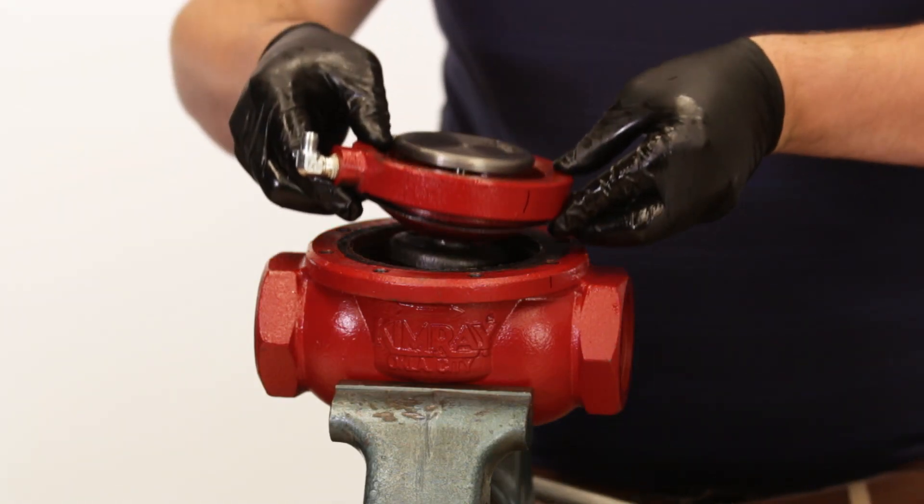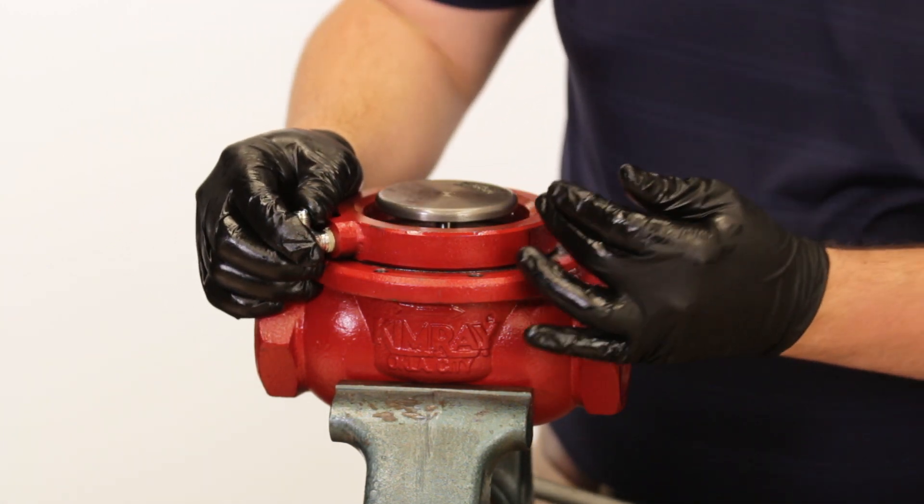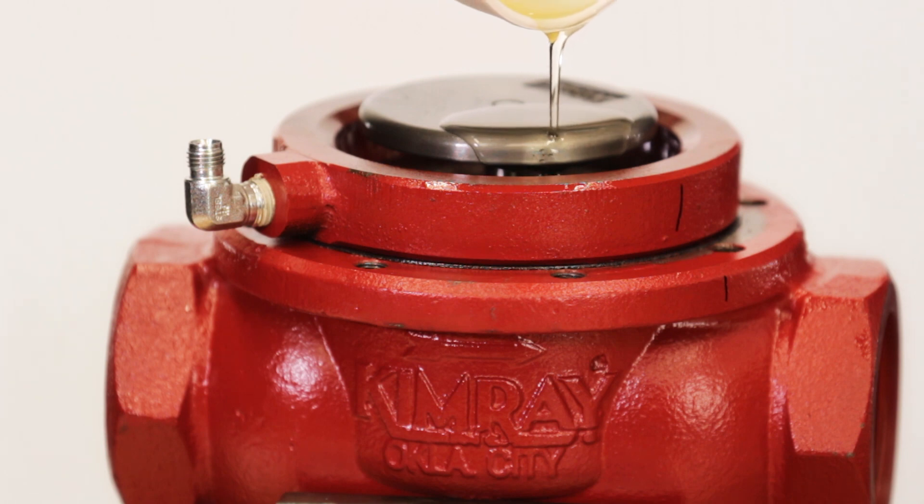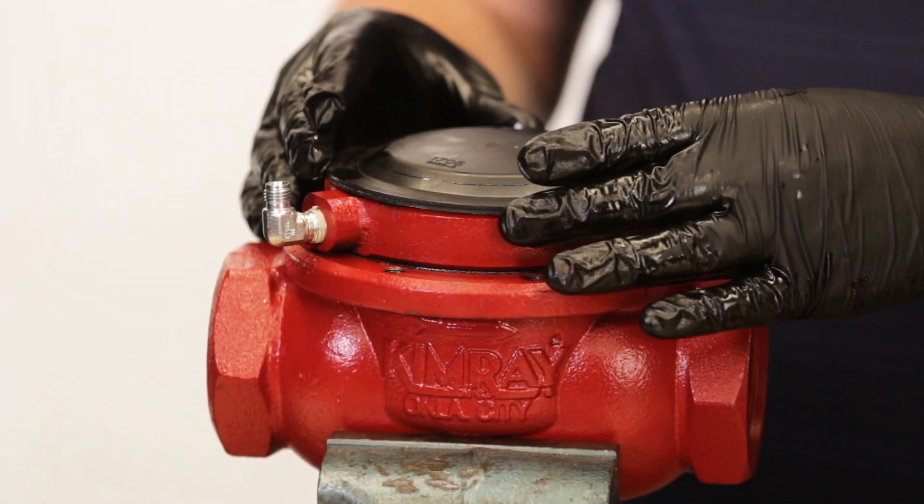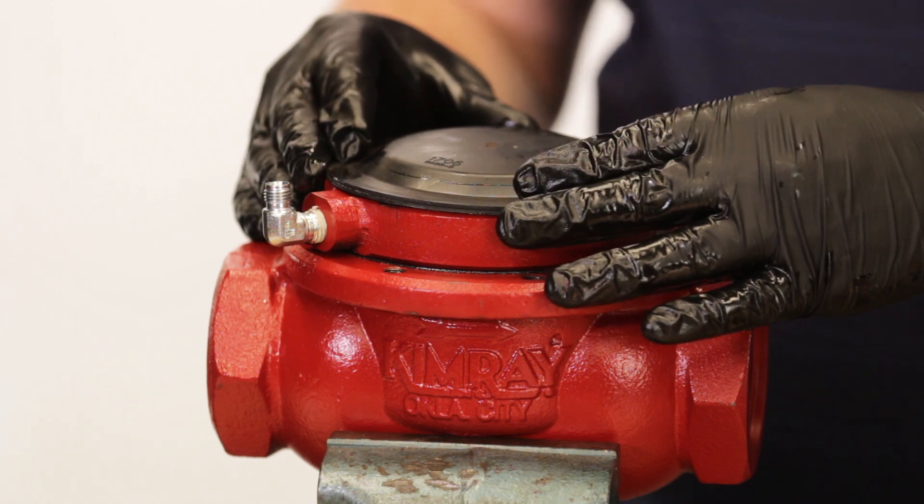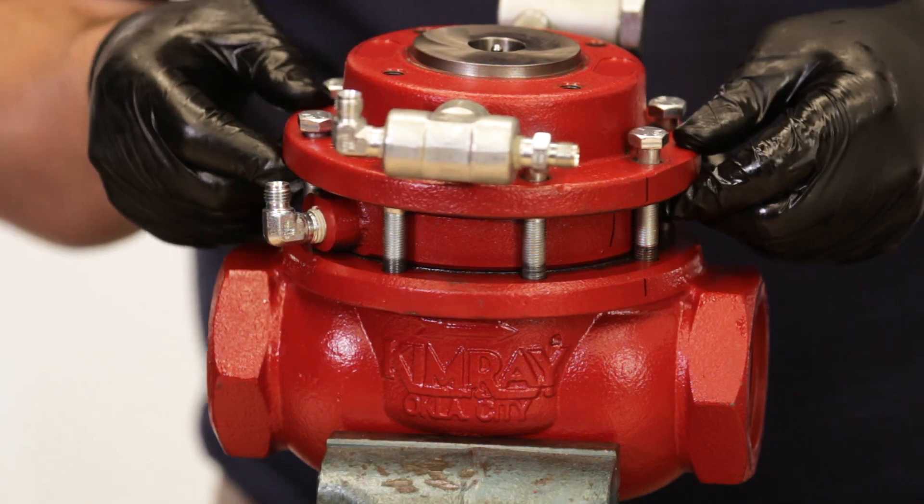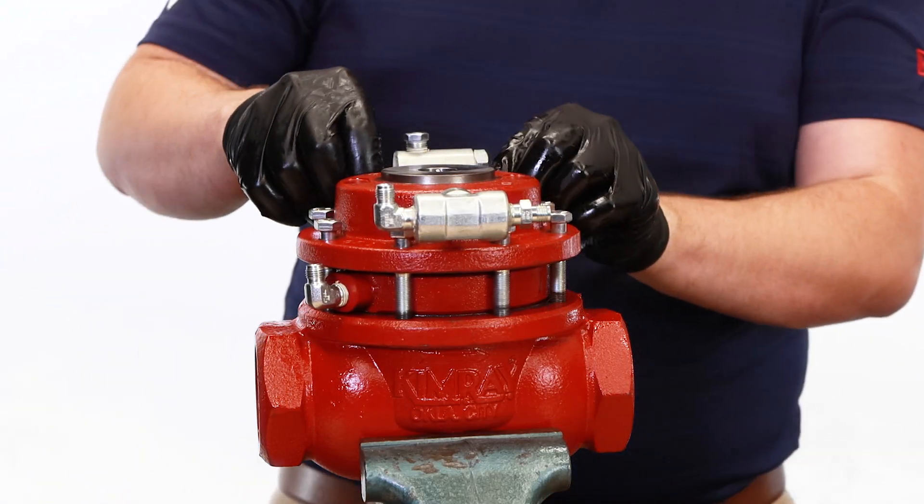Put the body back in the vise and put the lower housing back on the body. Be sure to align your marks. Fill the lower housing or oil bowl with low gravity oil, enough to cover the communication hole. Place the diaphragm on top, bevel side facing up. Replace the upper housing, aligning your marks. Only hand tighten the bolts at this point so that it is easier to replace the tubing later.